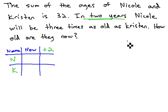Let's think about the now. If they have a sum of 32 and Nicole was 10, what would Kristen's age have to be so that the sum was 32? It would have to be 22, which we get by taking the total, 32, minus the 10, which is Nicole's age now.